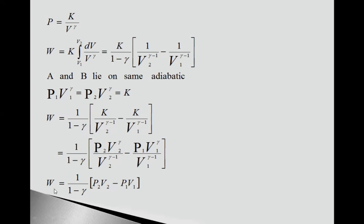If we simplify this, we get W equals 1 upon (1-γ) times [P2V2 minus P1V1].